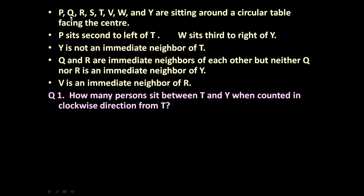The given problem is: P, Q, R, S, T, V, W and Y are sitting around a circular table facing the center. P sits second to the left of T. W sits third to the right of Y. Y is not an immediate neighbor of T. Q and R are immediate neighbors of each other, but neither Q nor R is an immediate neighbor of Y. V is an immediate neighbor of R.